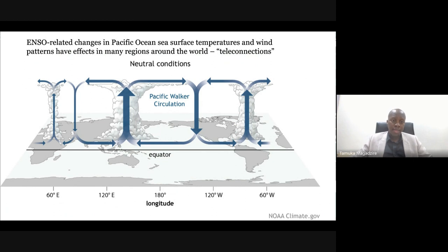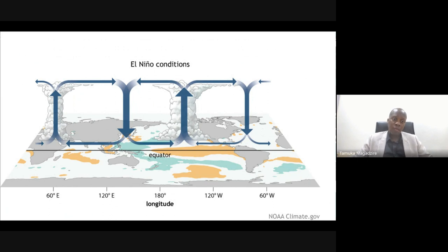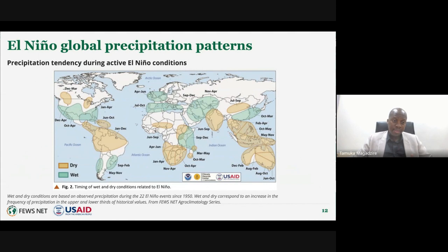While we focused on the Pacific Walker circulation, we also have other circulation patterns happening in the Indian Ocean, affecting rainfall over East Africa. Under El Niño conditions, changes in the Pacific Ocean have downstream effects impacting circulation in the Indian Ocean, and primarily in East Africa, we get increased convection and more rainfall happening in those areas.